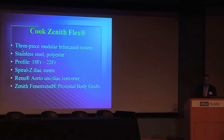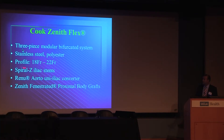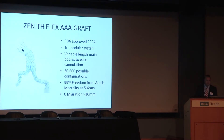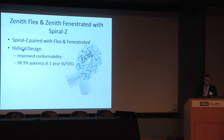The Cook Zenith Flex is a newer, lower-profile design compared to the previous Cook Zenith. It is a three-piece system with extenders on both iliacs, made out of stainless steel and polyester, which makes delivery a bit larger. It has spiral Z stents making the stents much more conformable, and additional technology including the Renu aorto-uni-iliac device and the Z-Fen for extending fixation into the renal segment. A tried-and-true system since 2004 — tri-modular, three-piece — with over 30,000 different configurations, 0% migration, and freedom from aortic mortality. Spiral Z stent iliac limbs provide very good flexibility and over 98% patency at one year.